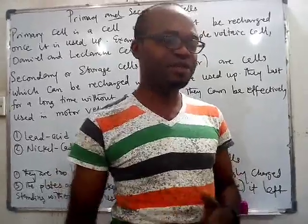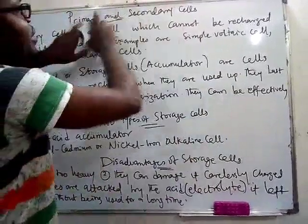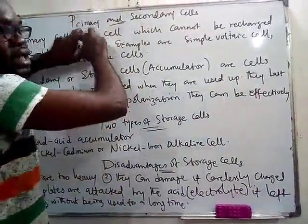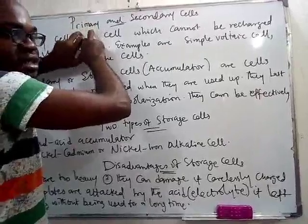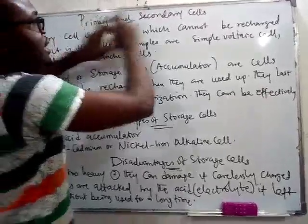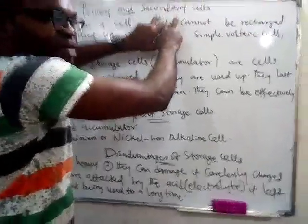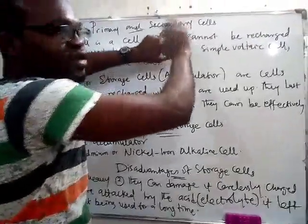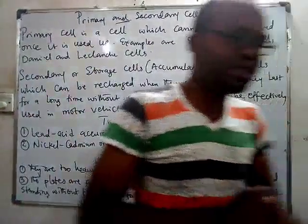Take notes: primary cells are ones that cannot be recharged when they are used up. Secondary cells you can recharge when they are used up, and they can be used for a longer time. The batteries used in cars and other places are secondary cells.